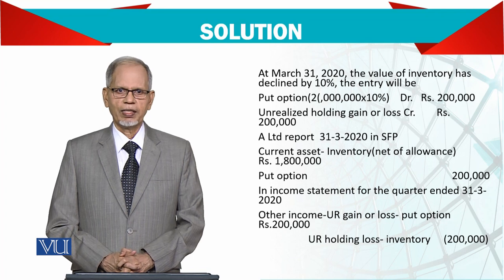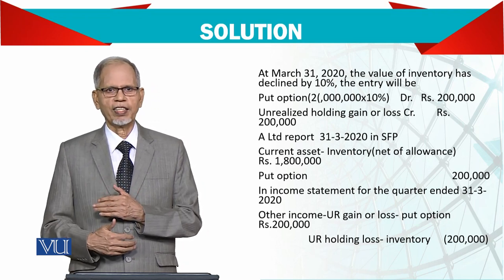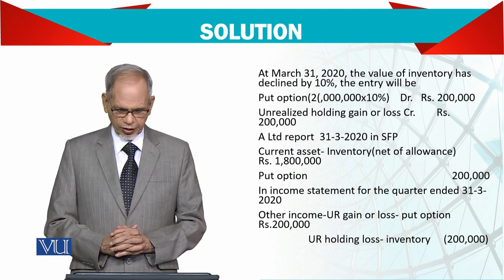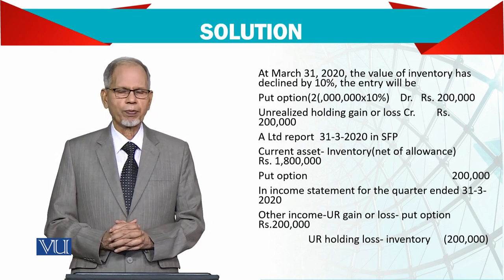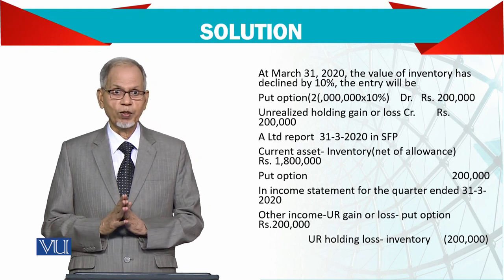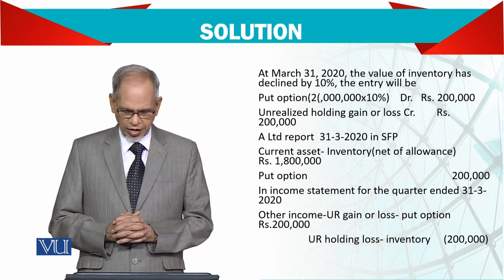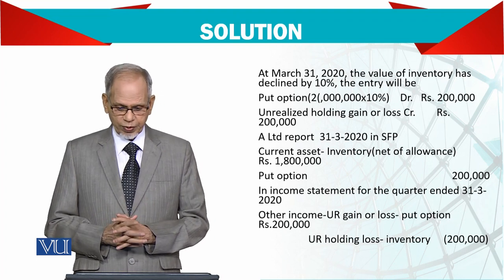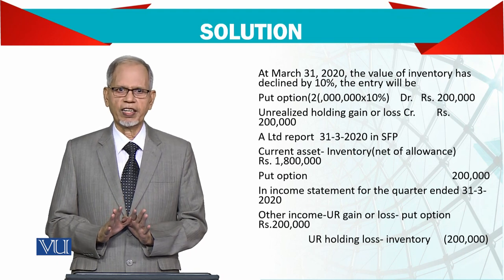For the first quarter income statement, you record the unrealized holding gain on the put option of 200,000, and the unrealized holding loss on inventory of 200,000. These two entries offset each other in the income statement, which is the key effect of fair value hedge accounting.